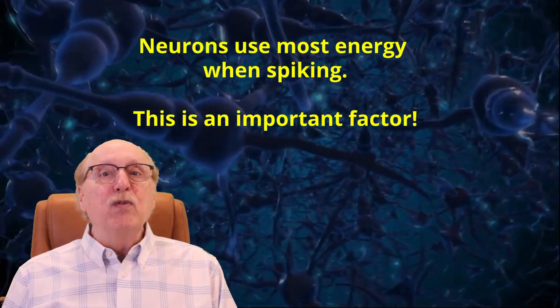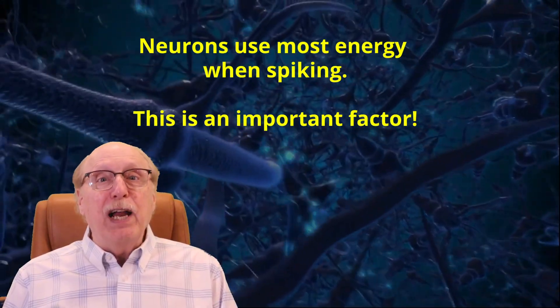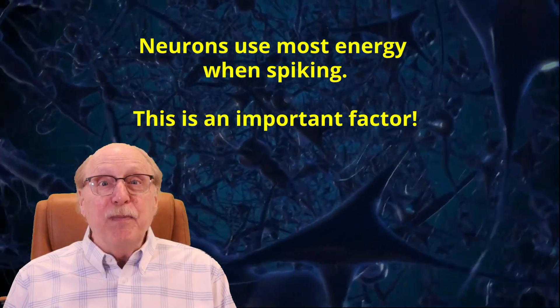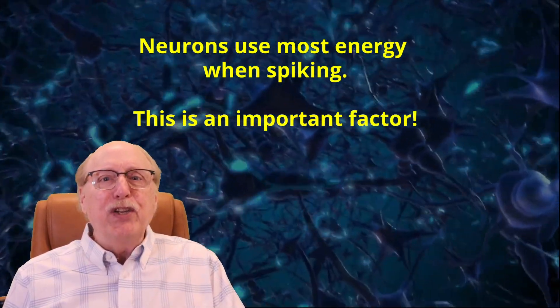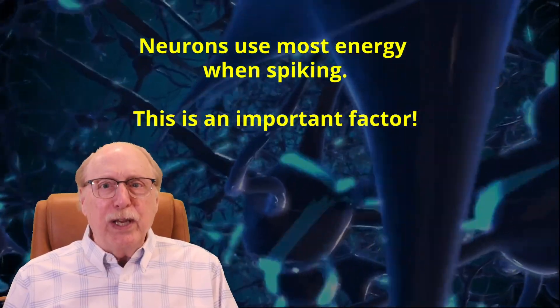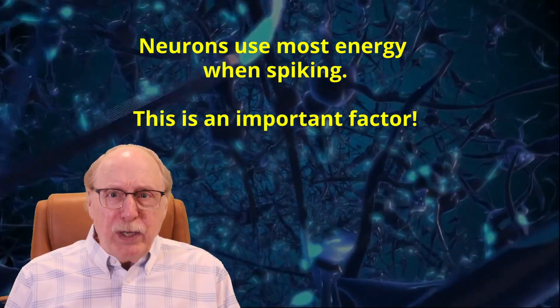Both neurons and gates use the most energy when they are firing or switching, and almost none at other times. In normal operation, the neurons in your brain are firing at a very low duty cycle, on the order of 0.2%.